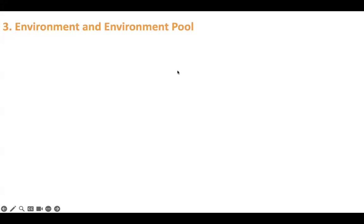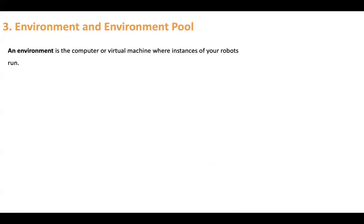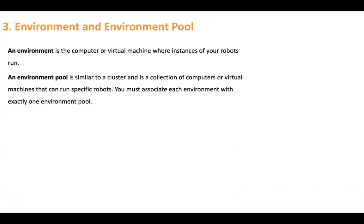Next is environment and environment pool. An environment is like a computer — a physical machine or virtual machine — where instances of your robots run. You need a machine where you will run the robot agent. An environment pool is similar to a cluster and is a collection of computers or virtual machines. You can have two virtual machines where you will run the robots and add both into one environment pool.